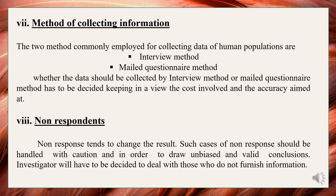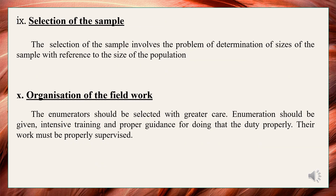Non-respondents: Quite often the data cannot be collected for all sample units; this incompleteness is called non-response. Non-response tends to change the result, and such cases should be handled with caution in order to draw unbiased and valid conclusions. Investigators will have to devise ways to deal with those who do not furnish information. Selection of the sample: If each observation is selected randomly, the sample will naturally reflect the quality of the population. The selection of the sample involves the problem of determining the size of the sample with reference to the size of the population.